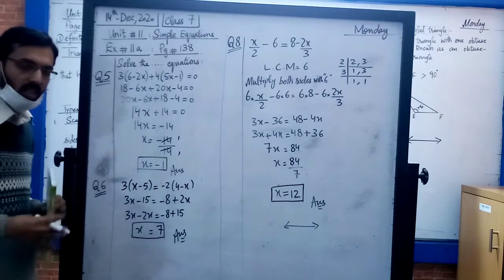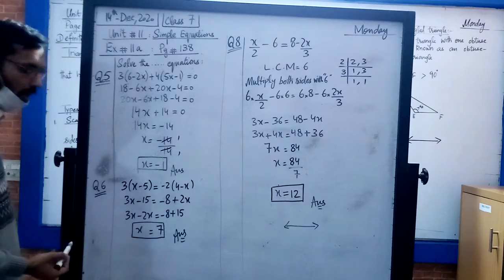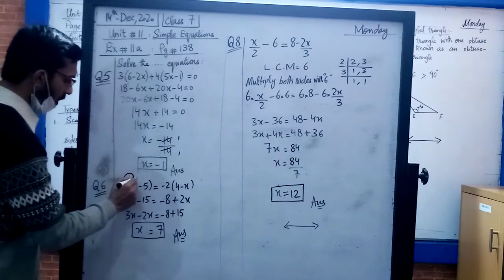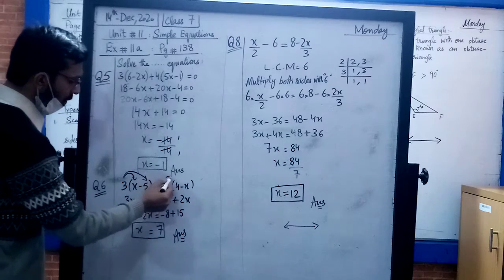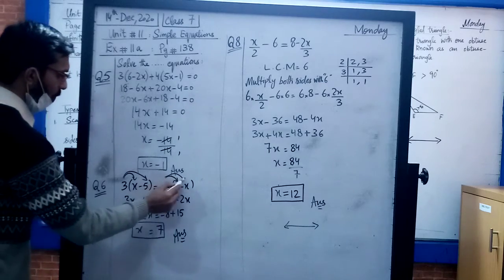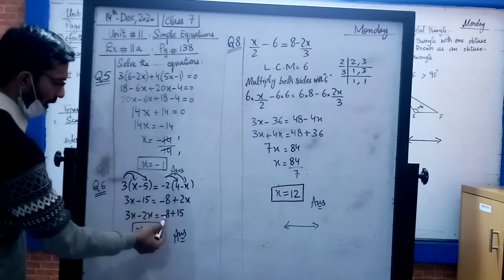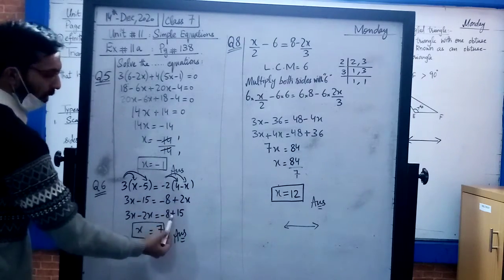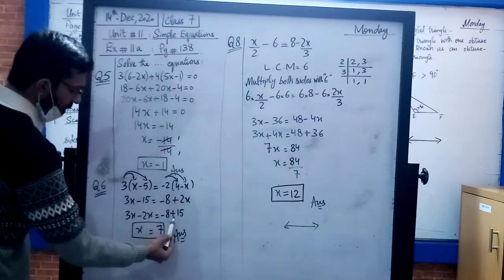Next, open the brackets and multiply: 3x minus 15, minus 8, minus, minus becomes plus 2x. Next step: 3x plus 2x on the left side gives 5x. Shift minus 3x, then minus 8 minus 15 plus 3.